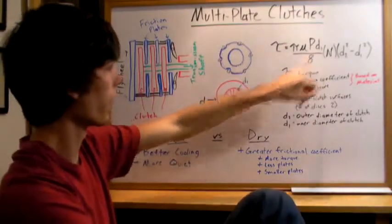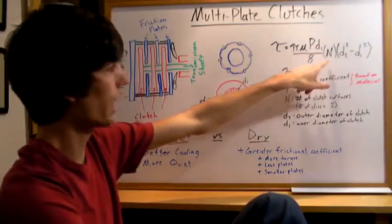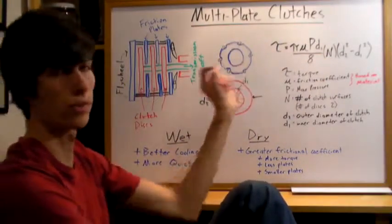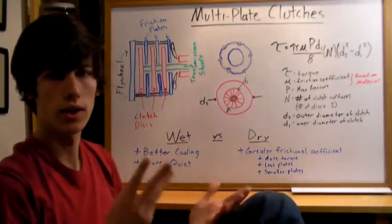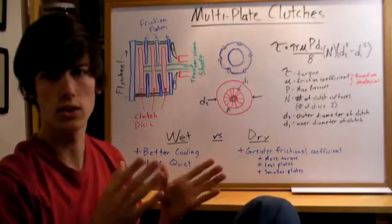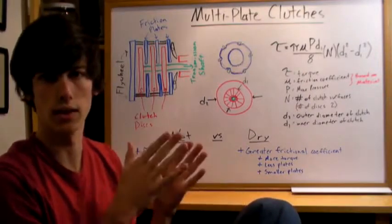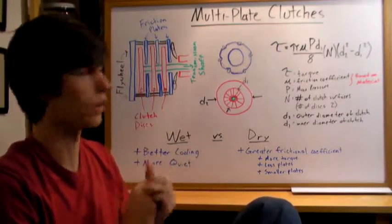A function of that inner diameter of that clutch, and then n is the number of clutch surfaces. So if you have, say, three clutch discs, and each clutch has the two sides that are in contact, so then you've got six clutch surfaces.